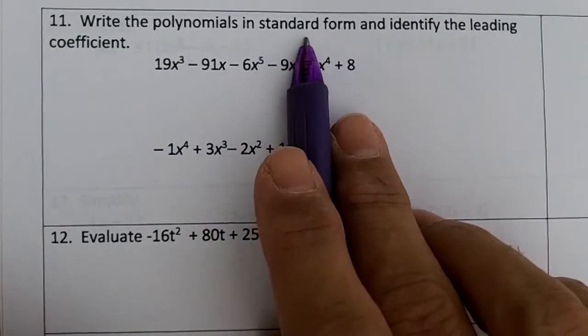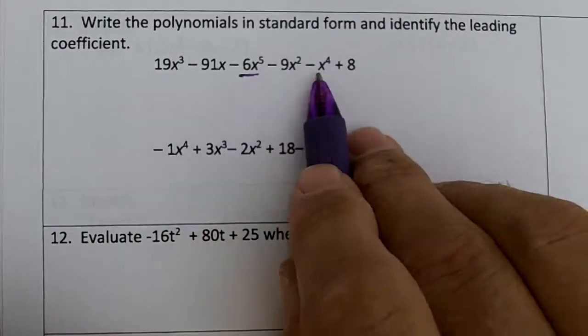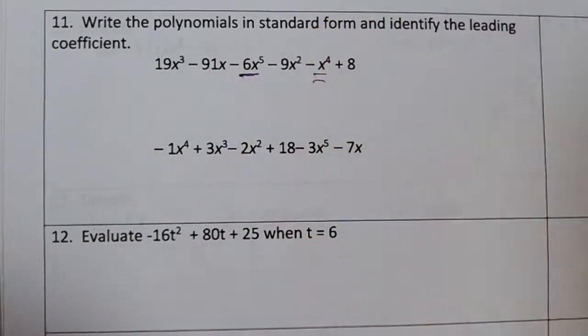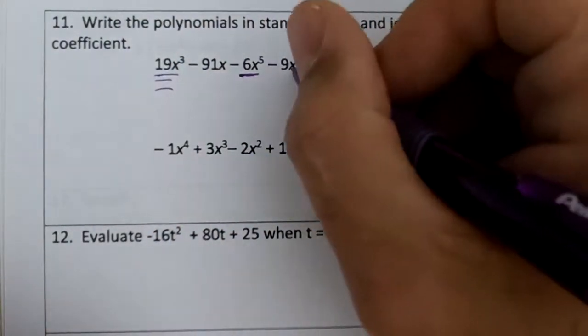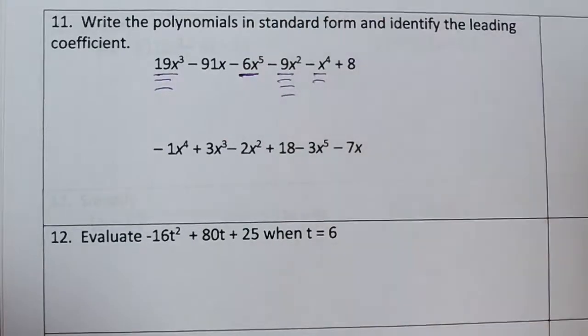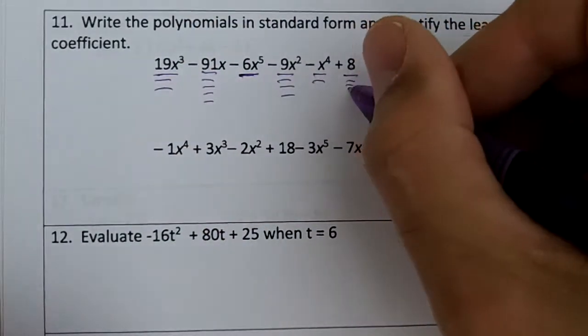We want to write it in standard form so our largest exponent gets a single underline. The next largest exponent is to the fourth, double underline it. The next largest exponent is 3, then 2, keep underlining. This is going to get five underlines and then that would get six underlines.